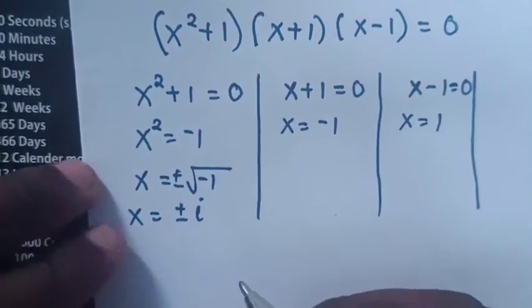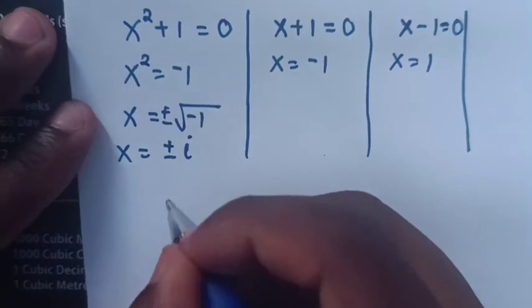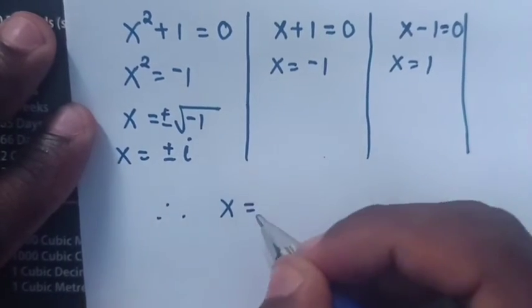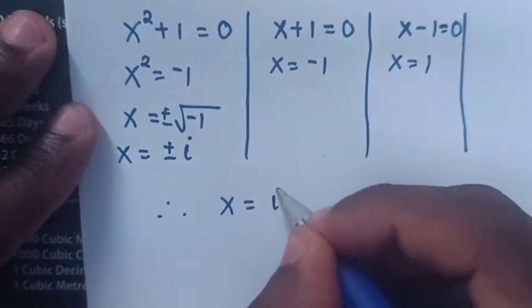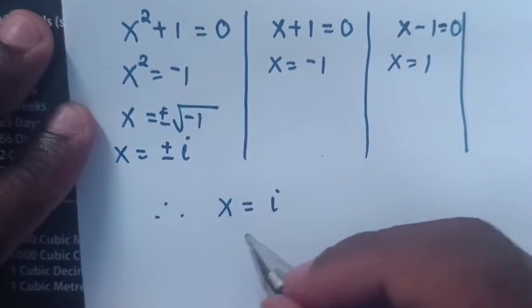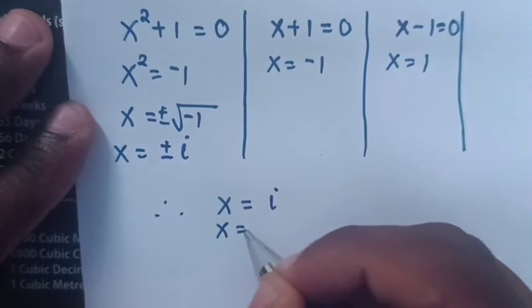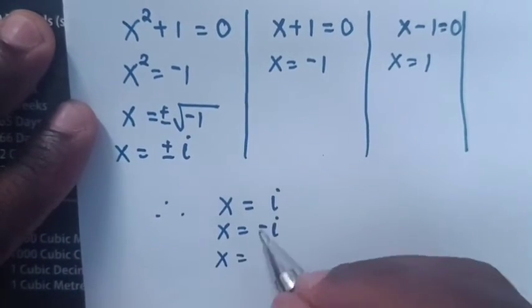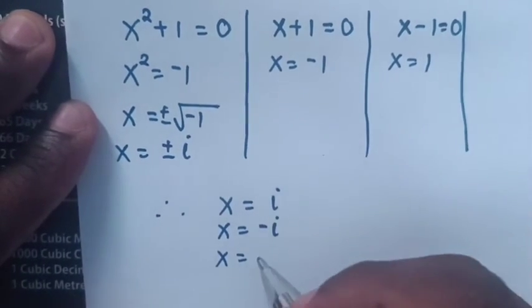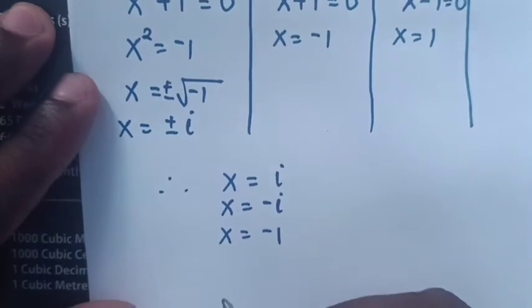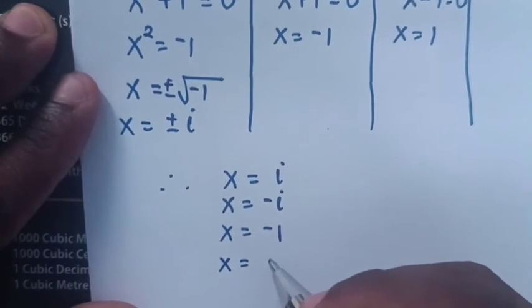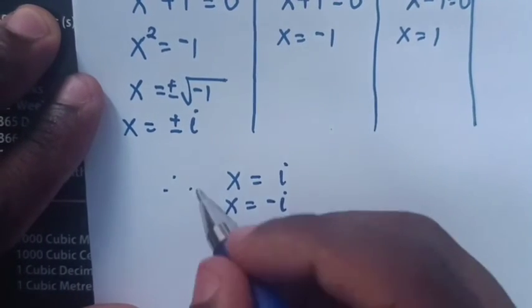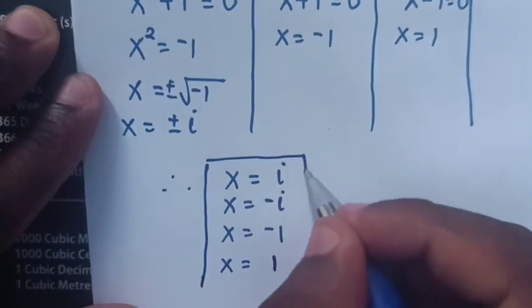Therefore, the values of x are: x = i, x = -i, x = -1, and x = 1. These are the four answers.